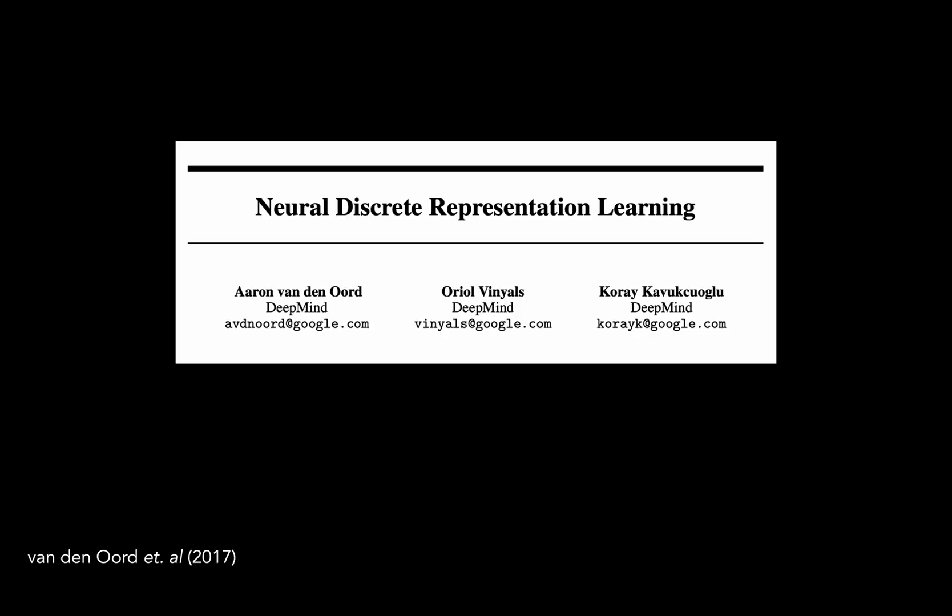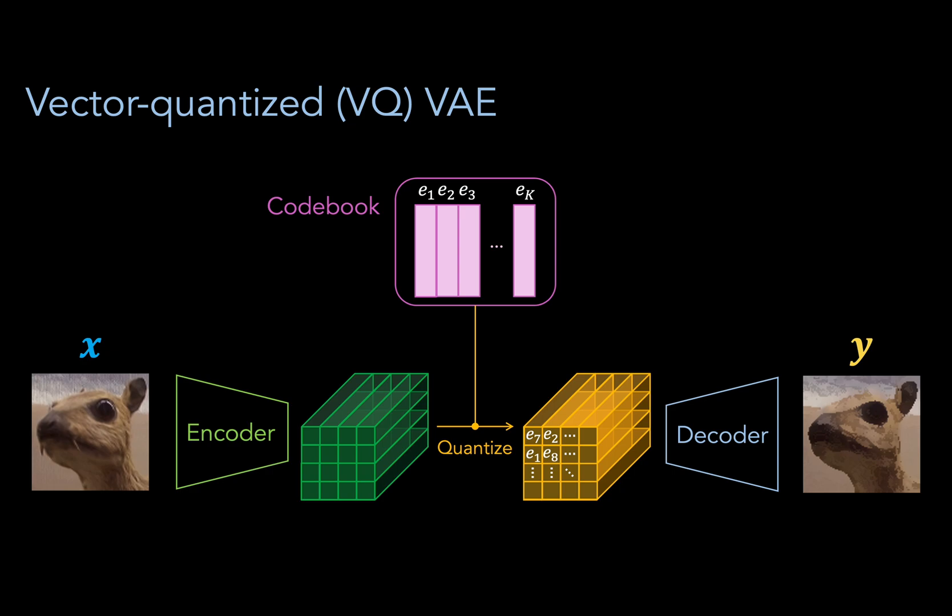This is the basic motivation behind the vector quantized variational autoencoder or VQVAE, which is basically a variant of the VAE in which the latent representation is discretized or quantized.